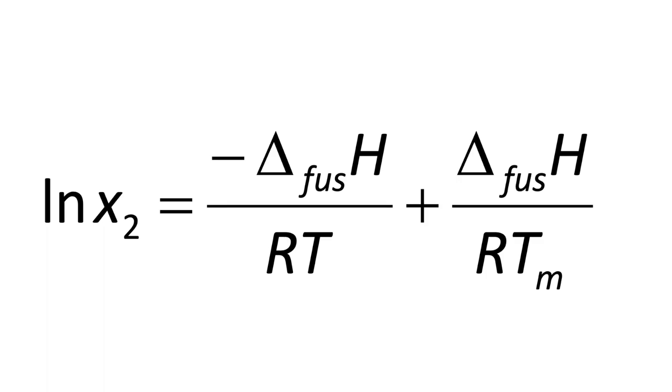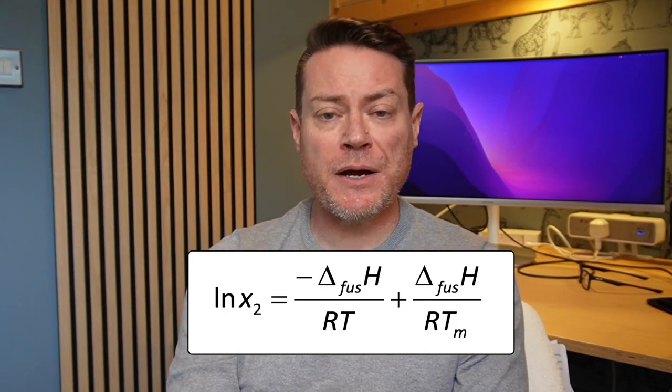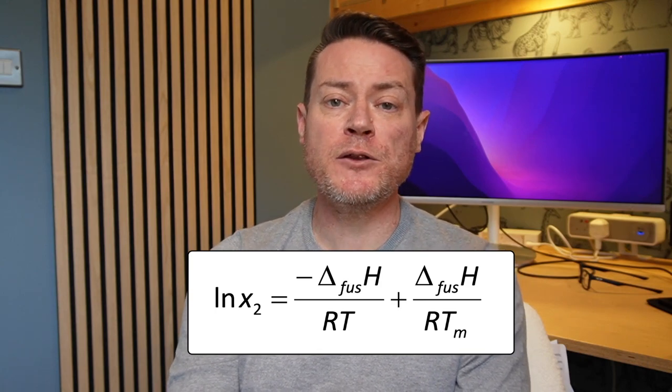Let's start with ideal solubility. This is a special case where the enthalpy of mixing is zero — in other words, the compound we are trying to dissolve doesn't interact either favourably or unfavourably with water. This is interesting because it allows us to derive an equation. I won't derive it here because that doesn't add anything to our discussion, but I've added a link in the description below should you wish to understand it. What's important is that this equation allows us to calculate ideal solubility if we know the melting temperature and enthalpy of fusion of our crystalline solid, and both of these values are easily determined with a simple DSC measurement. It's easy to calculate the ideal solubility for a given compound, but is it useful? That is more of a moot point.